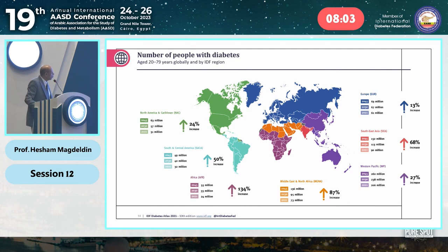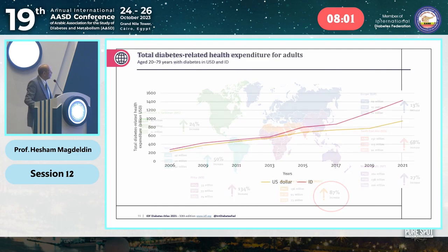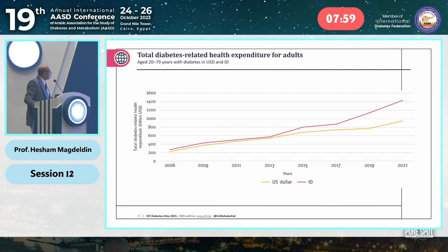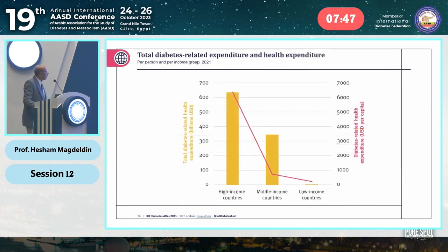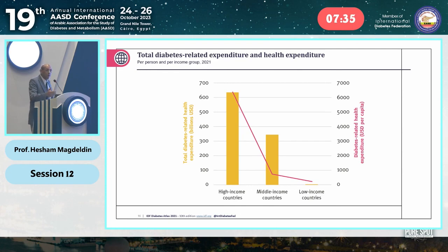Our MENA region is one of the areas where diabetes is increasing and costs are rising. In the last period the rise has been very steep. Unfortunately, the total diabetes-related expenditure is very high in middle and low income countries compared to high-income countries, which should be the reverse.